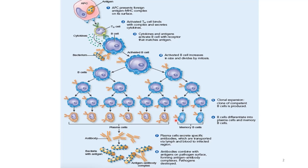What happens to the memory B-cells? Memory B-cells will circulate within our body fluid for a very long period of time. If the same bacteria ever reinfect our body, these memory B-cells can recognize the pathogen immediately and begin a very quick and effective secondary immune response that can destroy the reinfecting pathogen.